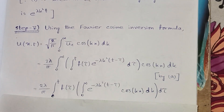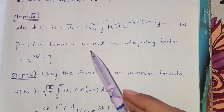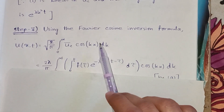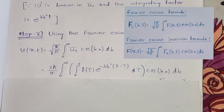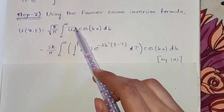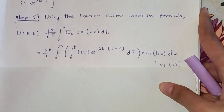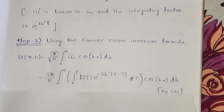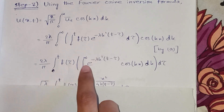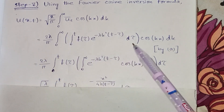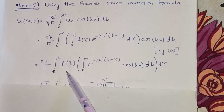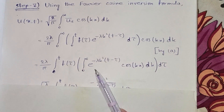Now we have ū_c but we need u(x, t), not the Fourier cosine transform. So we use the Fourier cosine inversion formula: u(x, t) = √(2/π) · ∫₀^∞ ū_c · cos(kx) dk. We substitute the value of ū_c from equation (A) into this formula, and it becomes a new double integral. We then change the order of integration — since everything is continuous — and take f(τ) outside the k-integral.